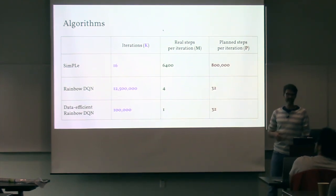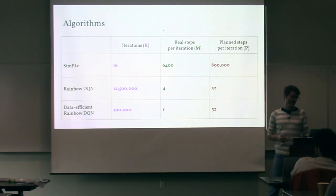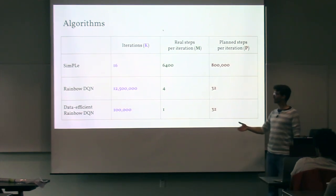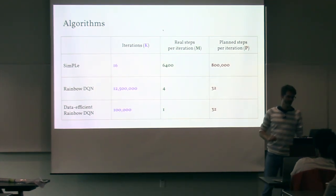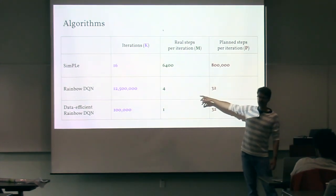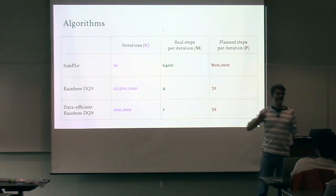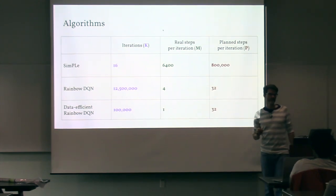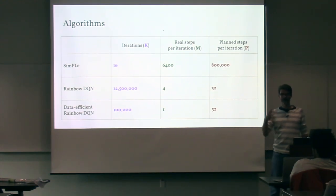A standard DQN-like setup — and RainbowDQN used exactly the same numbers as the DQN Nature paper — does 12.5 million iterations, with four real steps and 32 planned steps per iteration. Four times 12.5 million is 50 million steps, and each step is repeated four frames, giving 200 million frames. The 32 is basically the mini-batch size: every four steps you sample a mini-batch of 32 transitions and do one update.